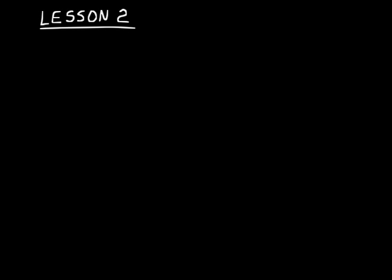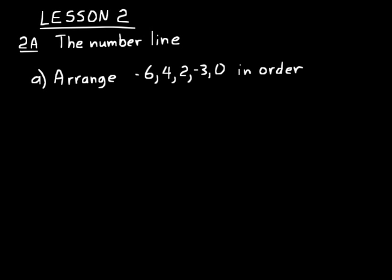In lesson two we'll be discussing the number line and ordering, and also rounding whole numbers. The first part of this lesson on number lines and ordering — the best way to understand this is to do some practice problems. Look at practice problem A: arrange those numbers in order from least to greatest and use a number line to do that.